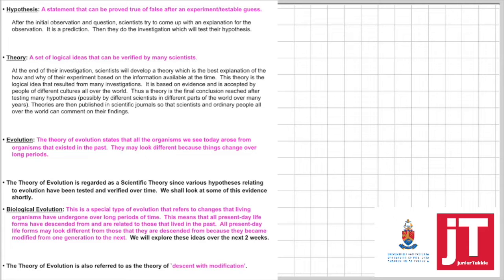Biological evolution is a special type of evolution that refers to changes that living organisms have undergone over long periods of time. This means that all present day life forms have descended from and are related to those that lived in the past. All present day life forms may look different from those that they are descended from because they have become modified from one generation to another. The theory of evolution is also known as descent with modification. As the organism was changing over time, the organism was becoming better.